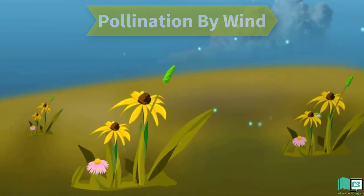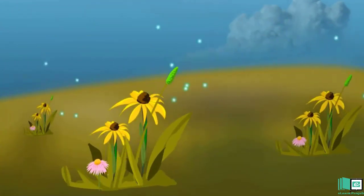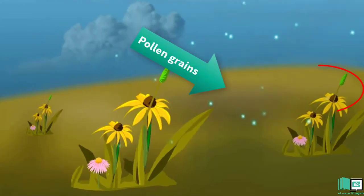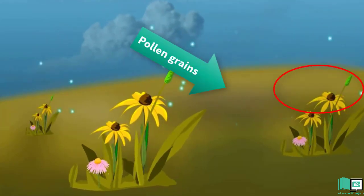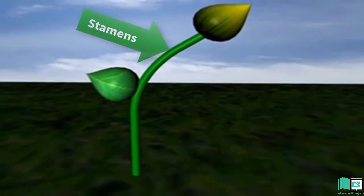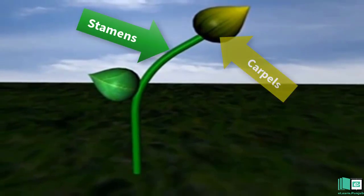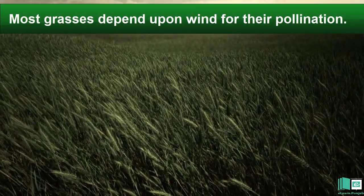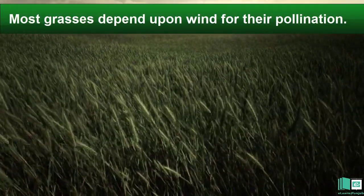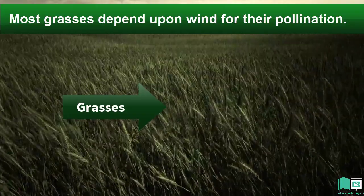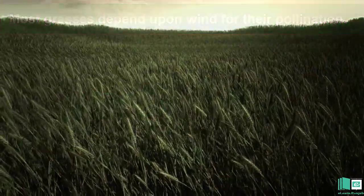Pollination by Wind: The wind picks up pollen grains from one flower and blows them onto another. Wind-pollinated plants have long stamens and carpels. Most grasses depend upon wind for their pollination.